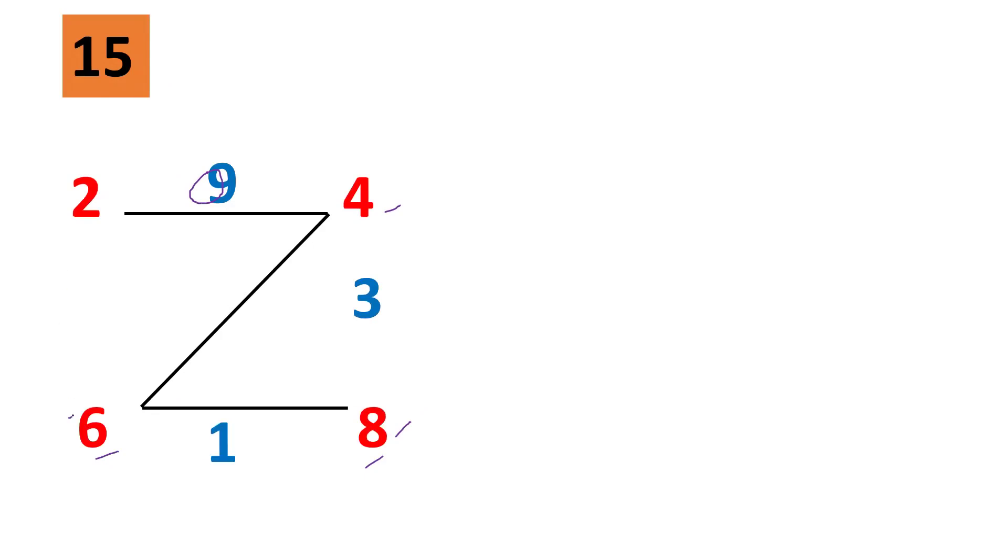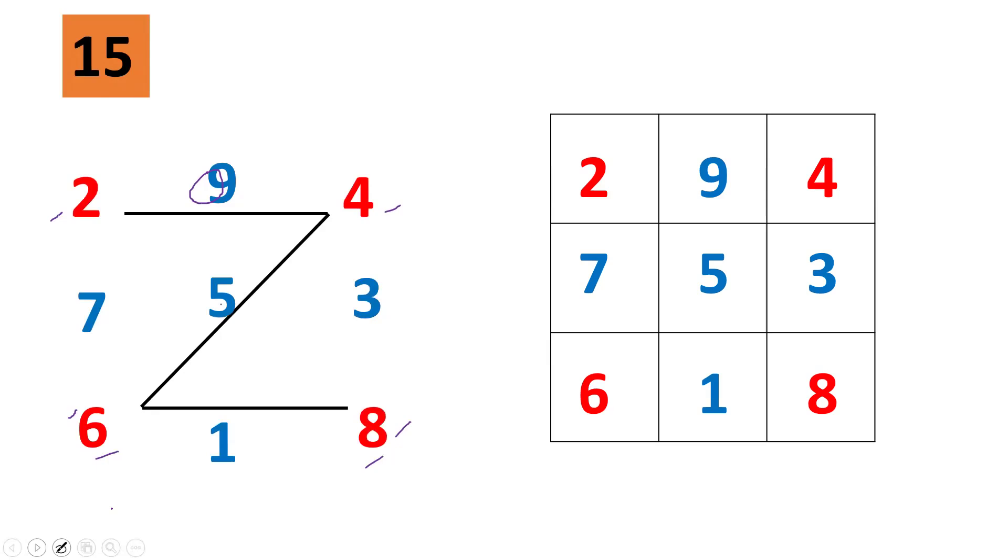And here 6 plus 2 is 8. I need 7 to make it 15. Now at last, 9 plus 1 is 10. So I need 5 here in the middle square. That's all. Finished. Now the magic square is ready, and I put the same numbers in square form.